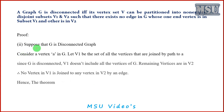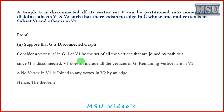For the second part, suppose G is a disconnected graph and we want to prove that a partition exists. Consider a vertex A in G. Let V1 be the set of all vertices joined by a path to A. Since G is disconnected, V1 does not include all the vertices of G. The remaining vertices form V2. Therefore no vertex in V1 is joined to any vertex in V2 by an edge. Hence if G is disconnected, a partition exists — the theorem is proved.